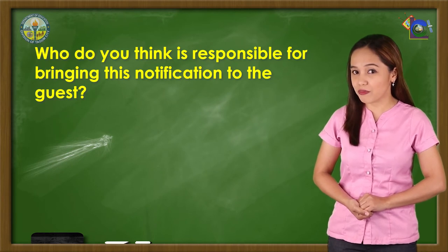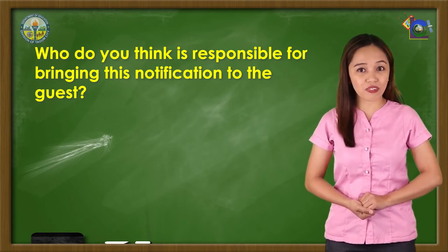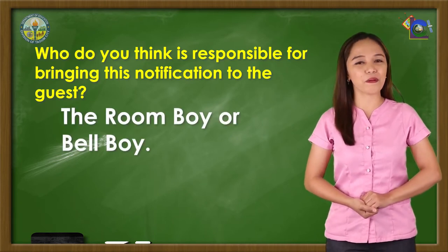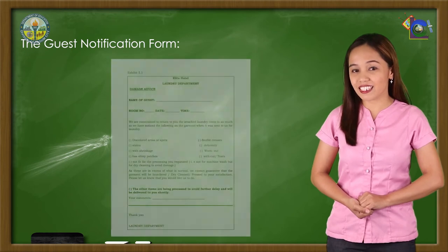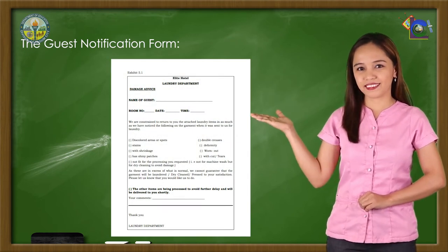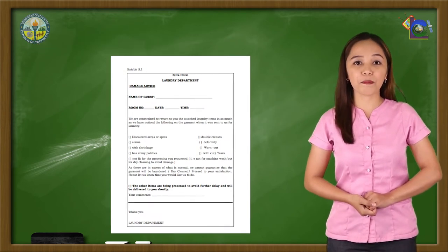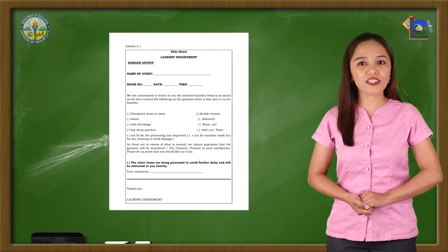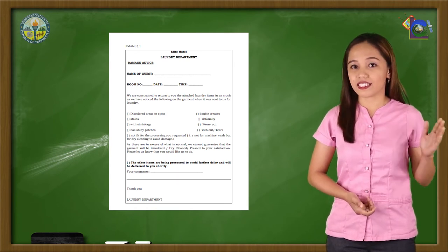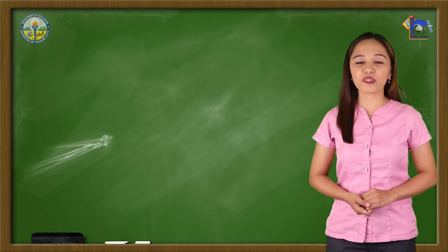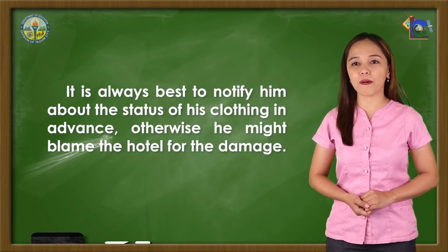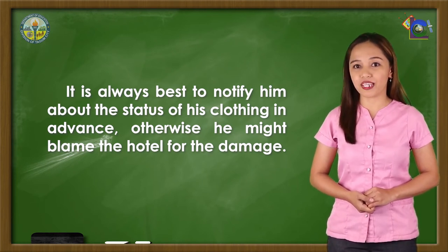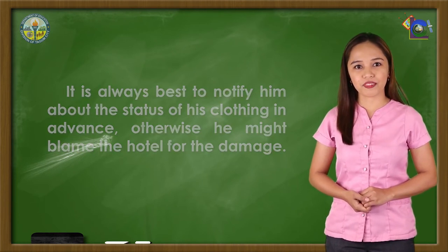The valet runner or room attendant who picks up the laundry fills up the guest notification form to notify the guest of any damage or discrepancy. Who is responsible for bringing this notification to the guests? It is the room boy or the bell boy. This form is used to alert the guest of any noted damage on his garment sent for laundry. It is always best to notify him about the status of his clothing in advance; otherwise, he might blame the hotel for the damage.